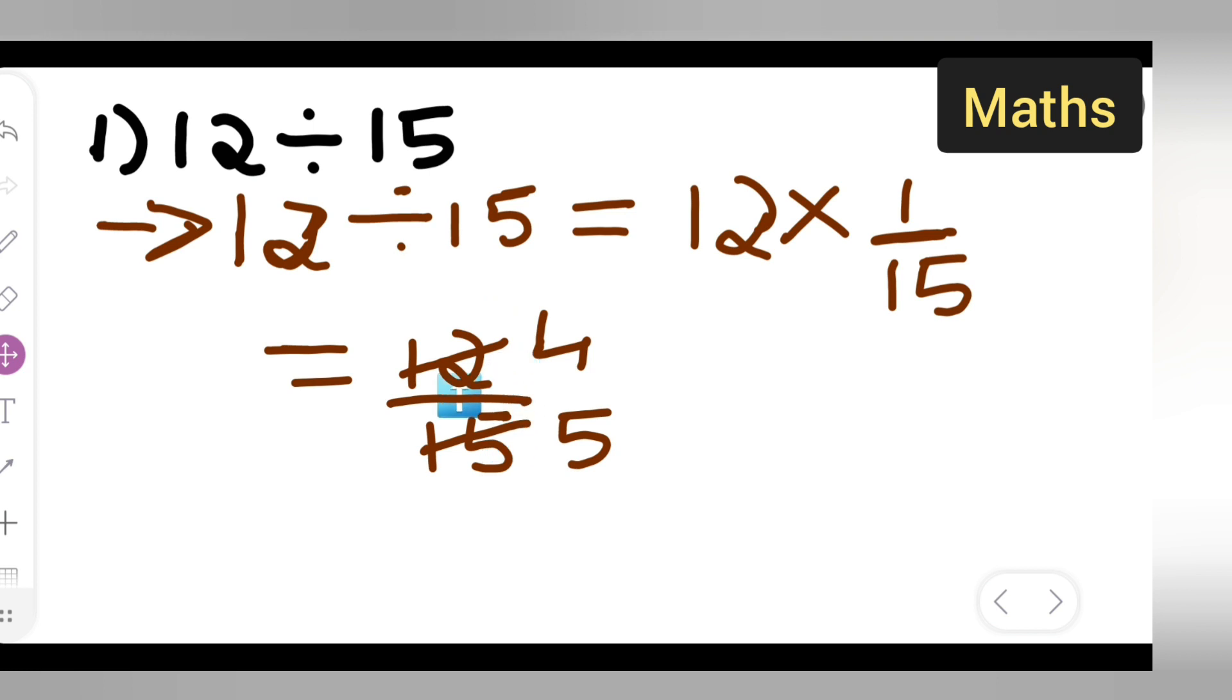In the table of 2, it won't get cancelled because one is even number, one is odd number. So next we are looking for table 3. 3 times 4 is 12. 3 times 5 is 15. So basically your answer is 4 upon 5. I hope you all have understood how to divide 12 upon 15.